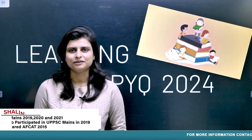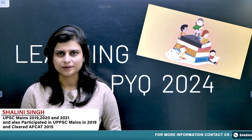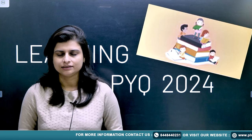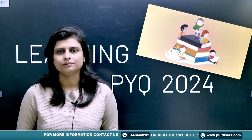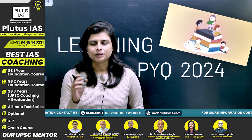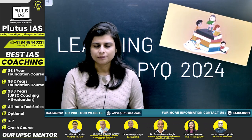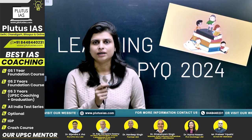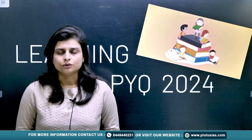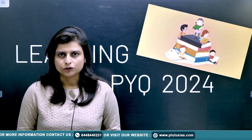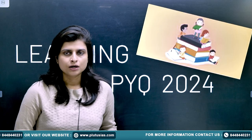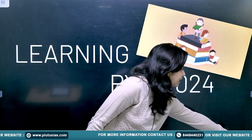Hello everyone. Today we'll be solving a previous year question paper of psychology. I've taken a topic-wise analysis, which means right now I'll be doing the topic of learning. We'll understand how many questions came from which topic and how to attempt that question within the time frame. Today I'll be taking the chapter of learning, and in 2024 we have three questions from learning. Let's begin.